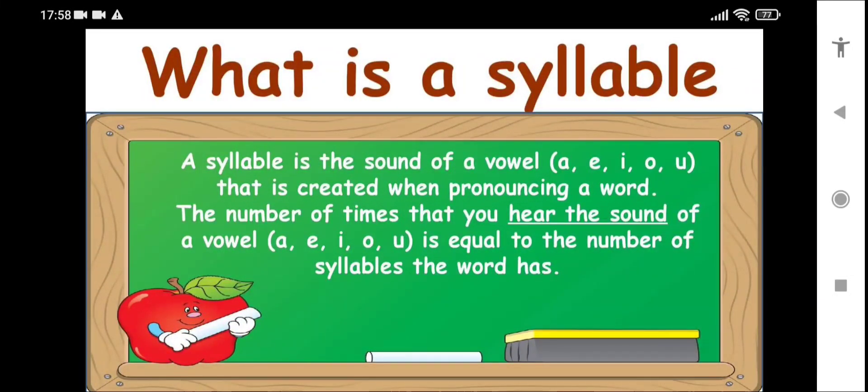What is a syllable? A syllable is the sound of a vowel - a, e, i, o, u - that is created when pronouncing a word. The number of times that you hear the sound of a vowel is equal to the number of syllables the word has. You divide the word into syllables. Each syllable must have a vowel. Here you have an example.